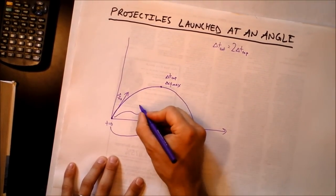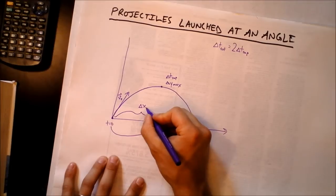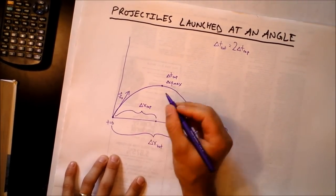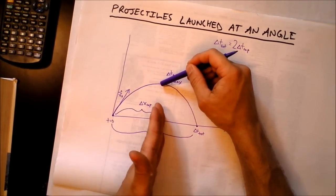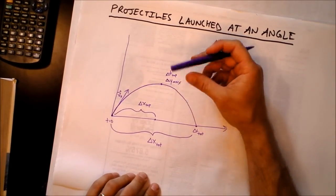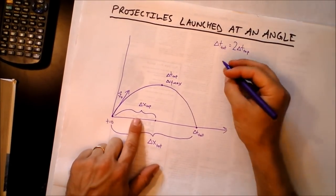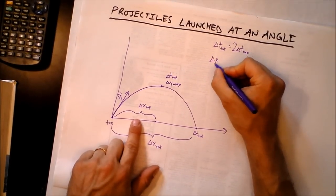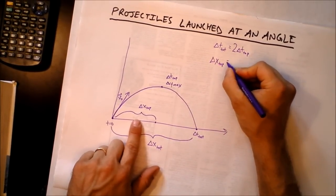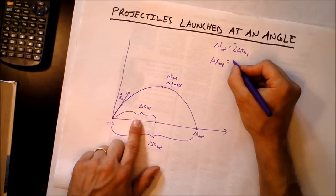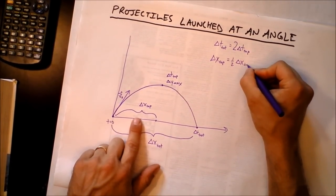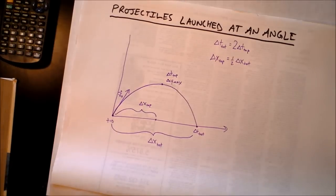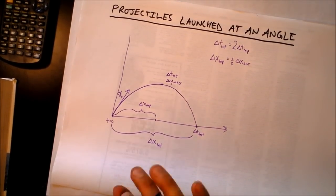Would it be fair, I hope it wouldn't be too confusing, to call this distance right here delta x at the top. When it is at the top of its path it has gone this far in the x direction. Can we make another little equation here that says delta x top is equal to one half delta x total?